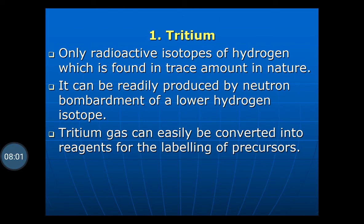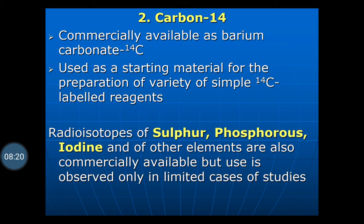Tritium is the only radioactive isotope of hydrogen found in trace amounts in nature. It can be readily produced by neutron bombardment of the lower hydrogen isotope. Tritium gas can easily be converted into reagents for labeling of the precursor. Carbon-14 is commercially available as barium carbonate (14C), used as a starting material for the preparation of a variety of simple 14C-labeled reagents, and carbon-14 is used widely.